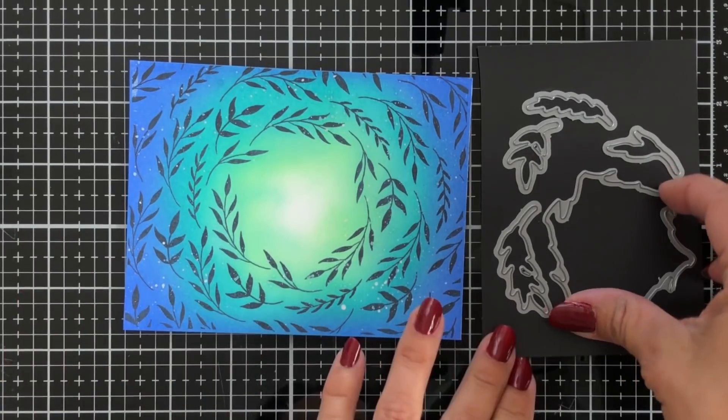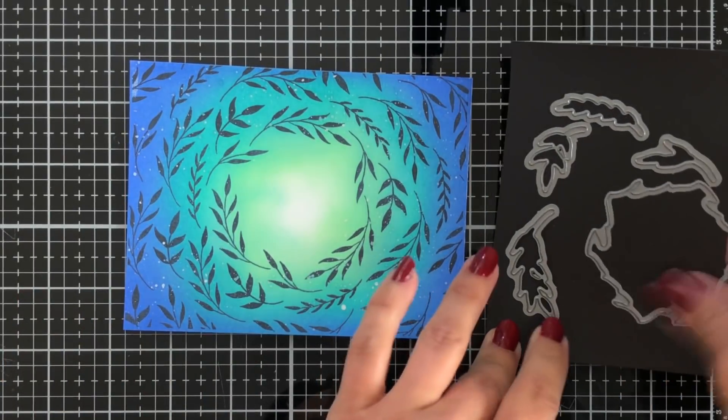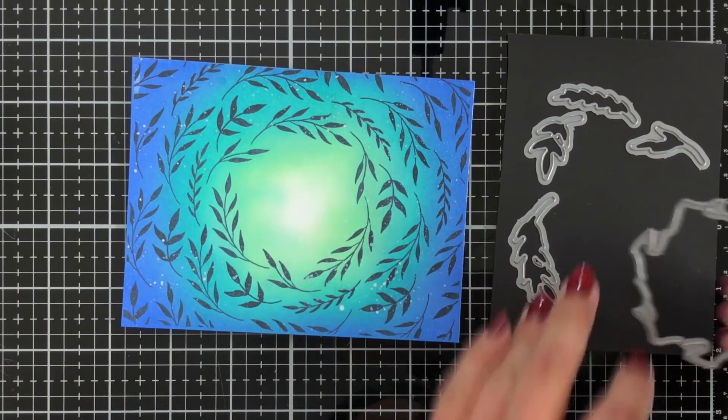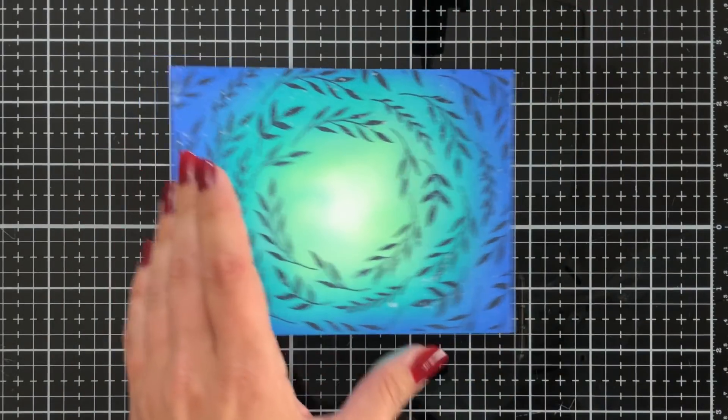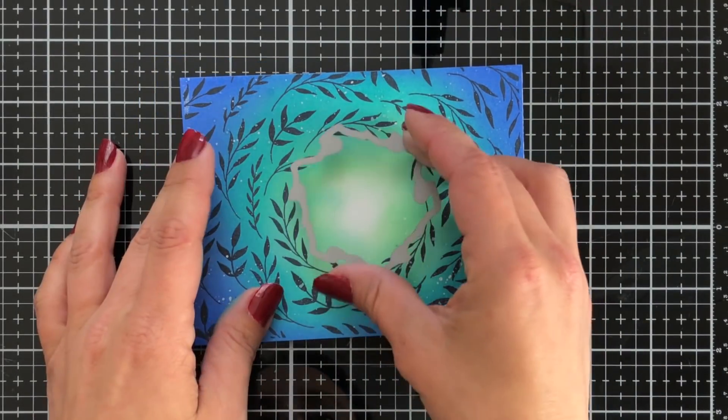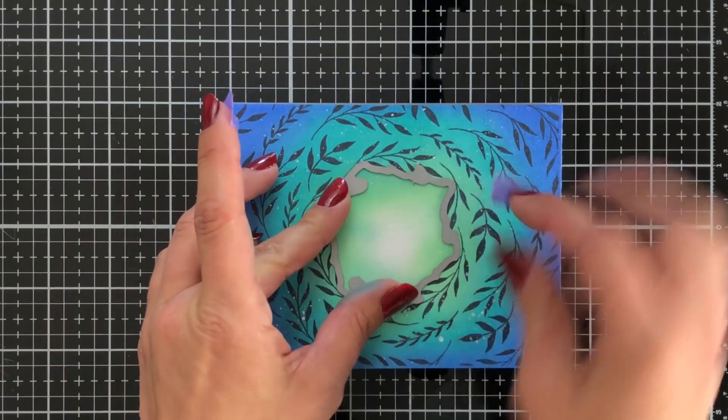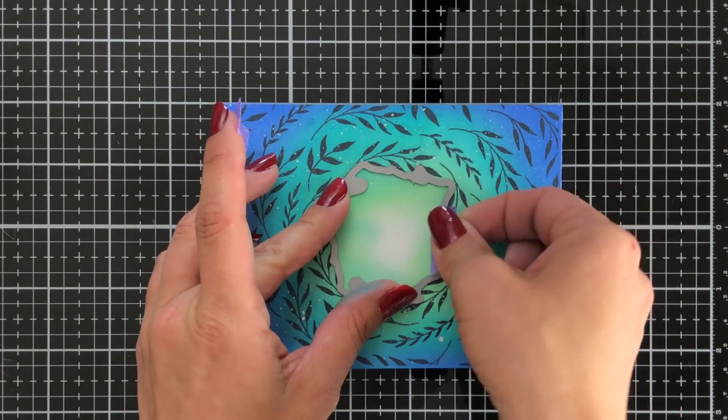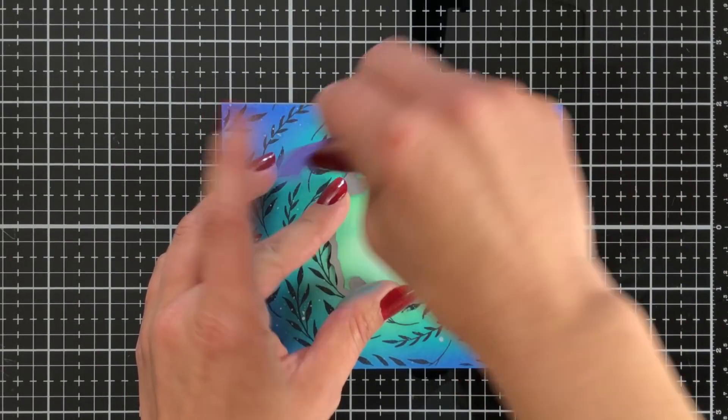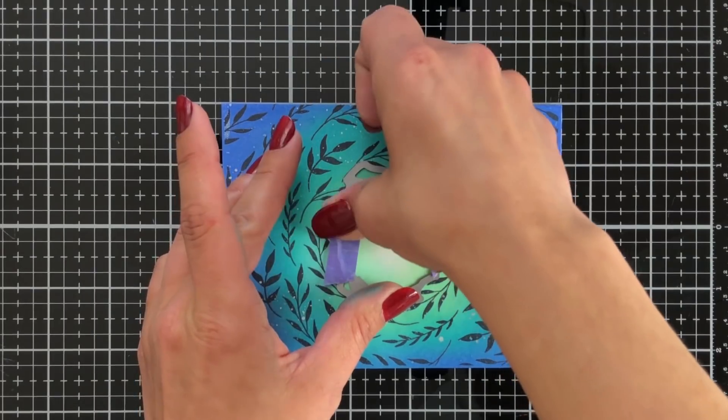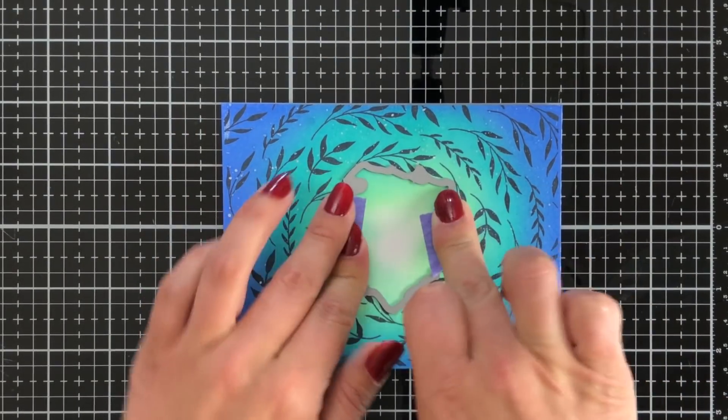So this does come with a coordinating die set. I'm going to die cut out that middle. So I'm going to take that to the center of my cardstock and just kind of twist and turn until I get this lined up. They do cut really close to the leaves. So when you're trying to figure out the spot to match it up with, just keep that in mind. It does die cut really close to those leaves.